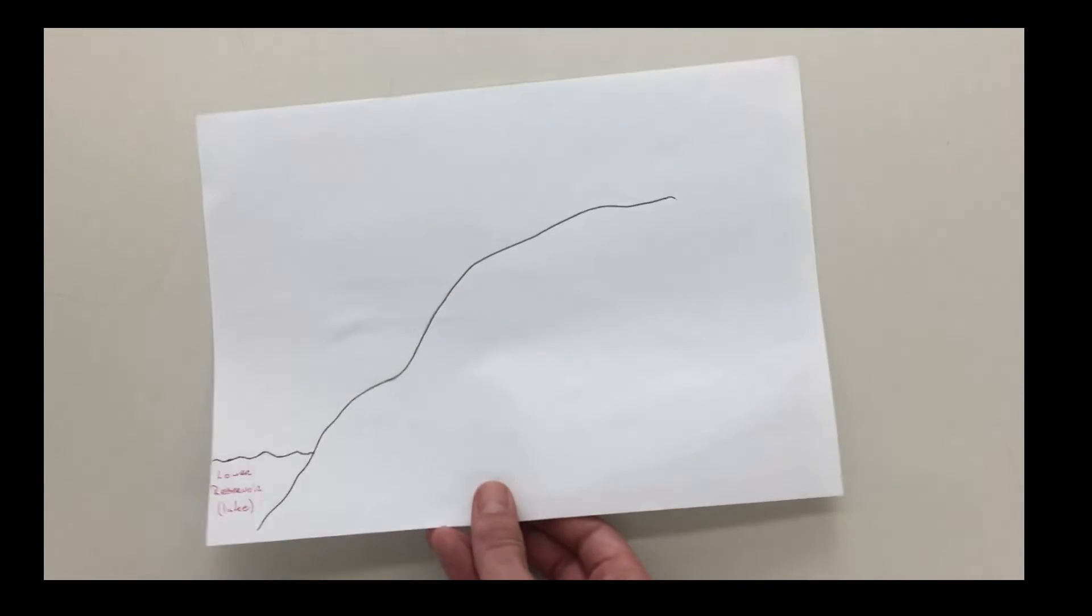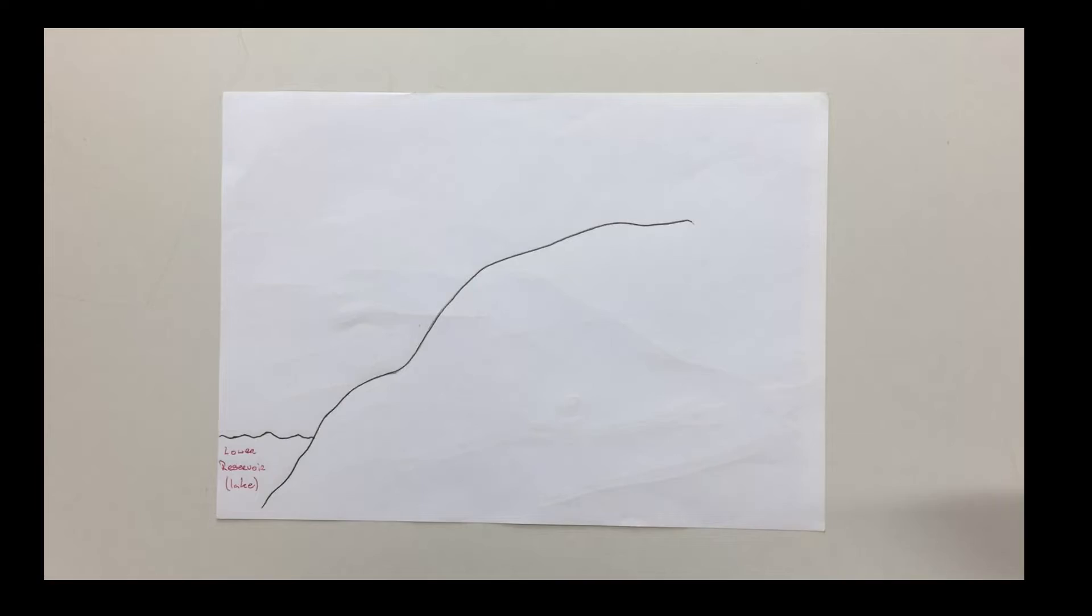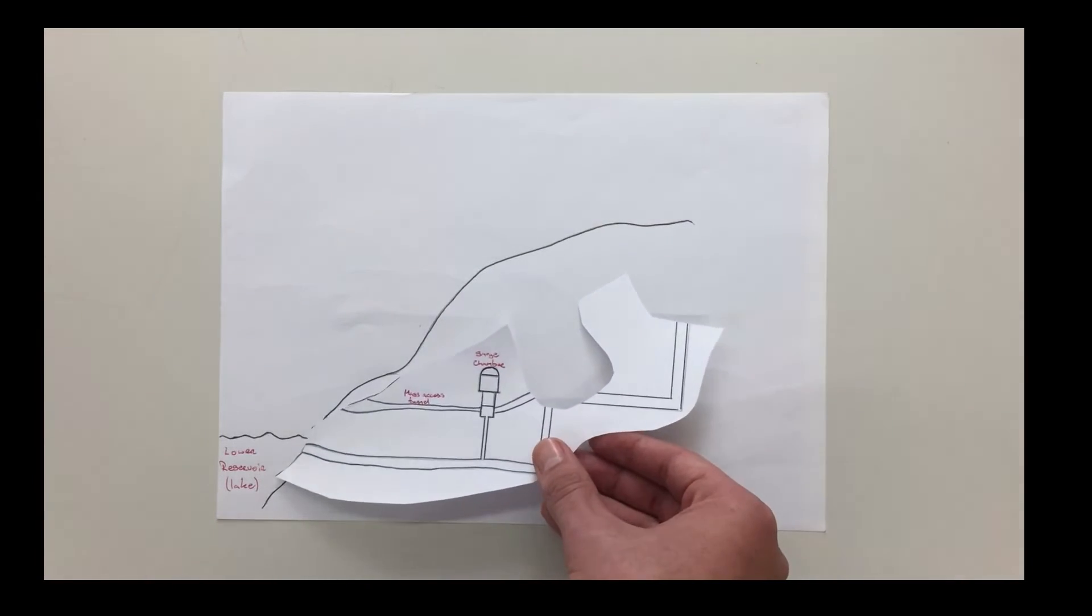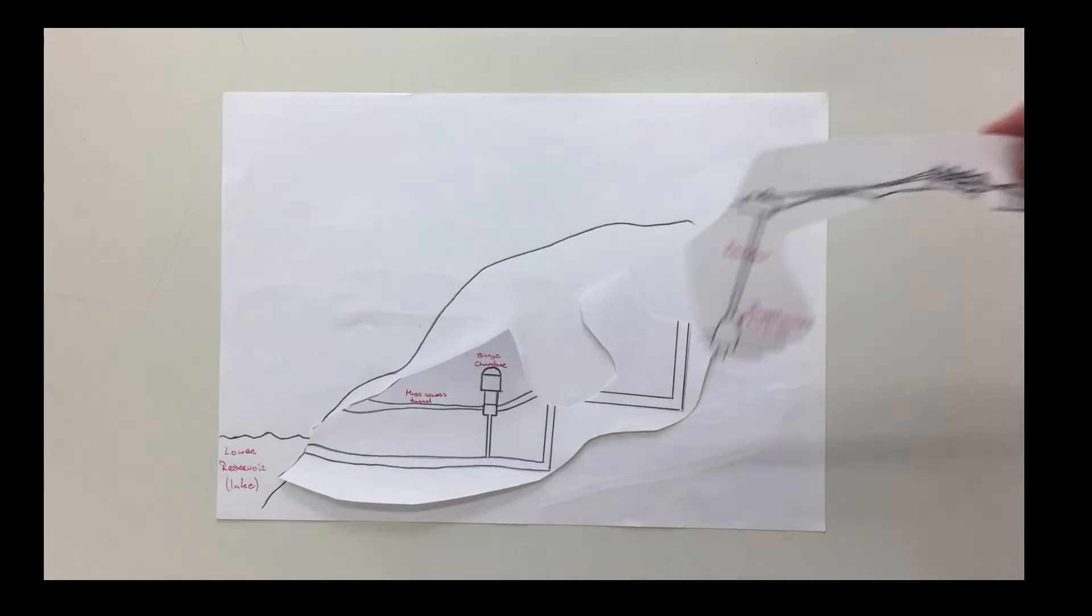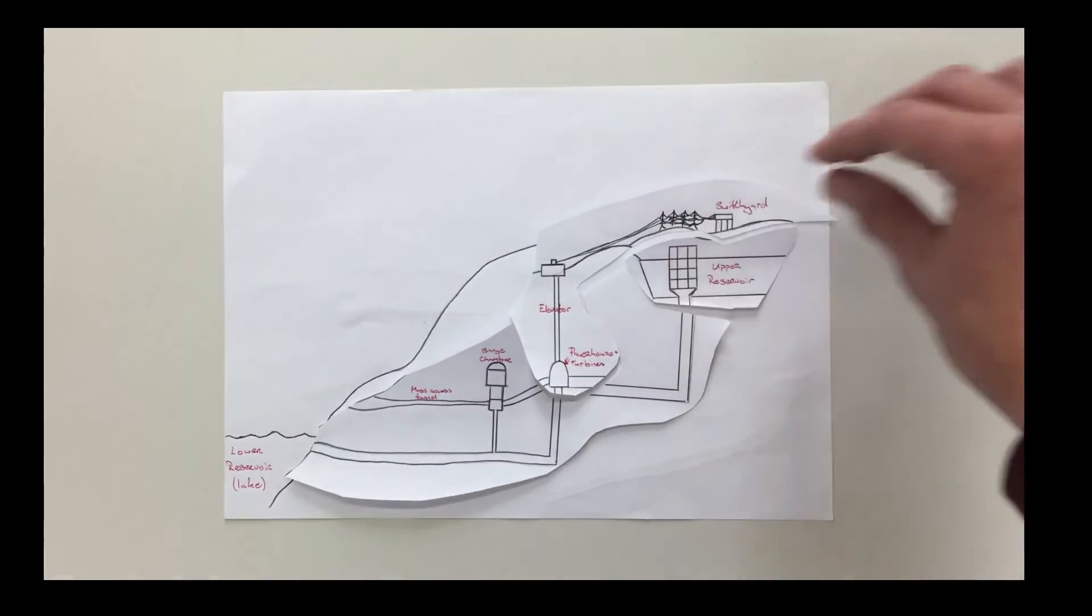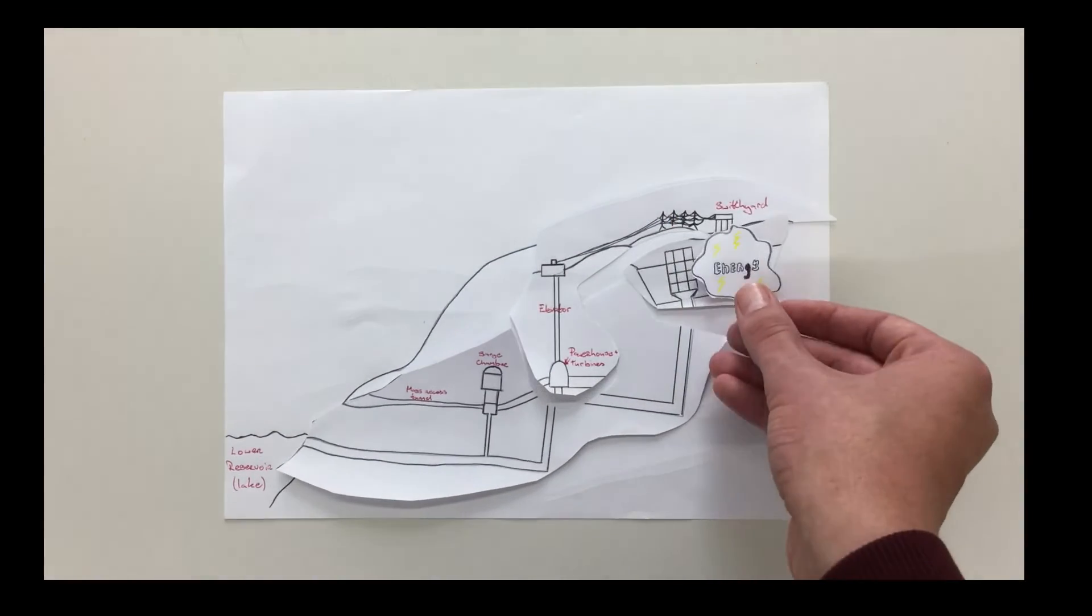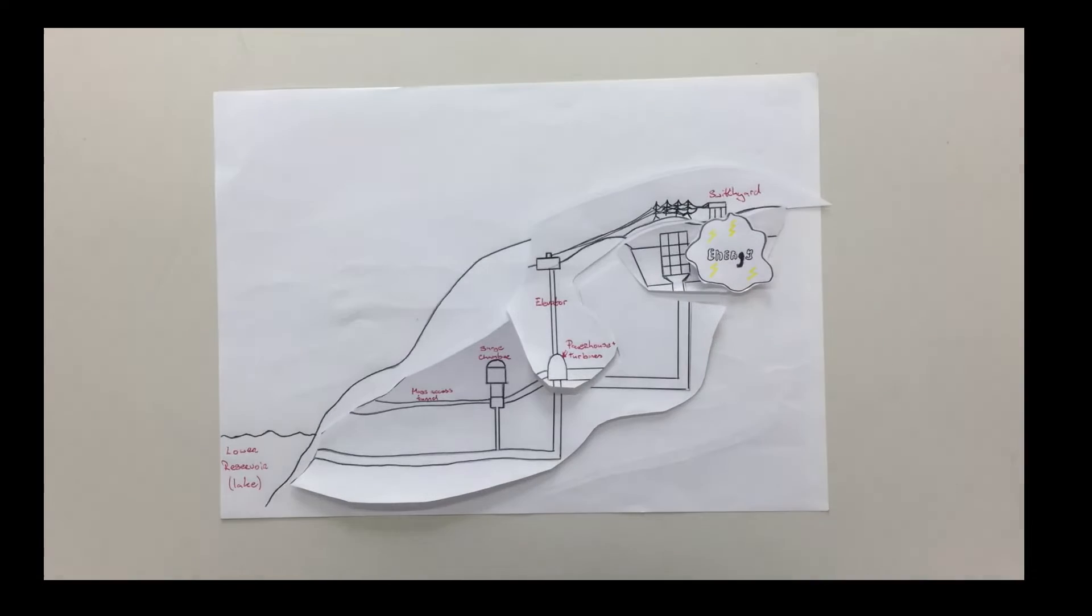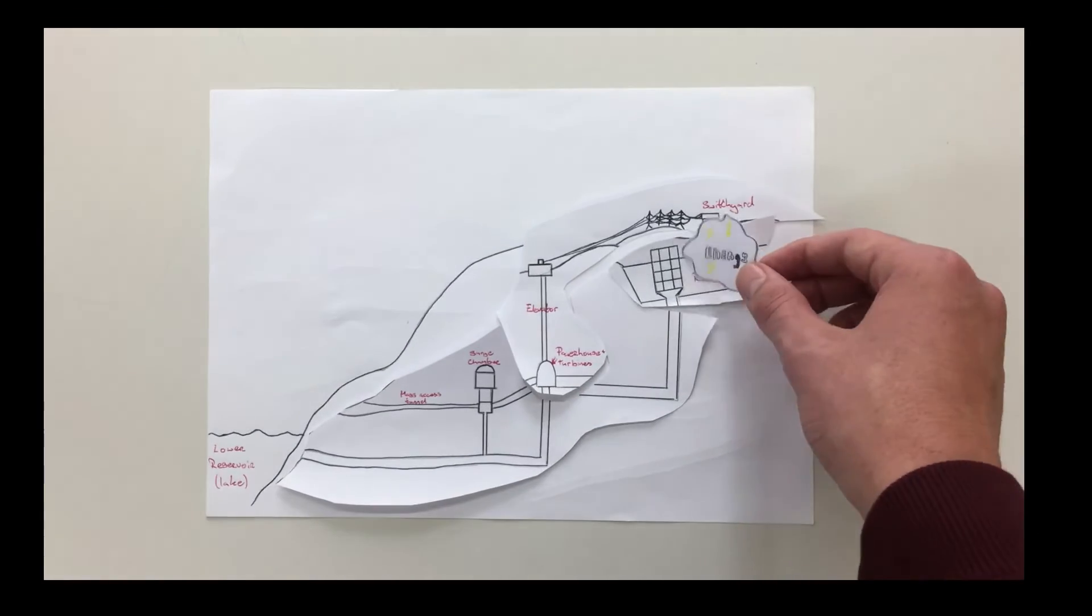In water storage, water is pumped up a hill at night. Less energy is needed and this electrical energy is converted into potential energy held by the water. When energy is needed, the water is released down the hill flowing through a turbine that converts the kinetic energy to electrical energy.